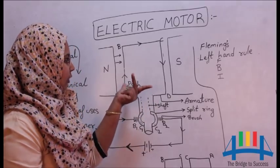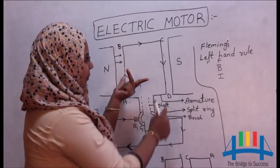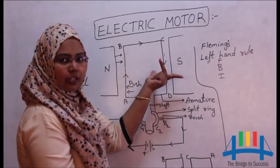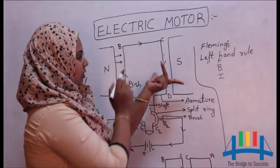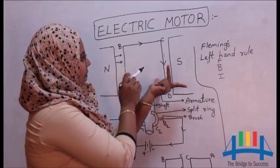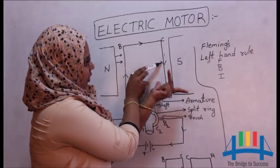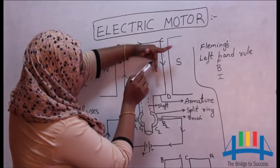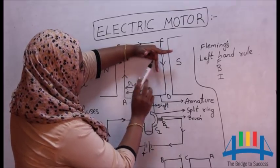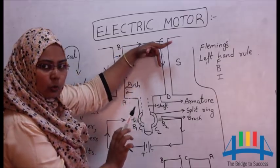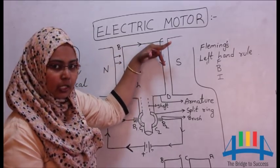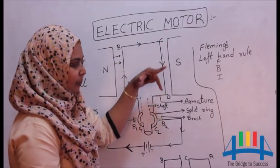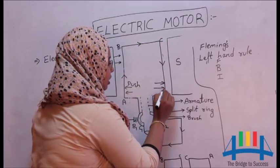The same rule, if I apply to this arm CD, the direction of magnetic field is same. It will never change. That is from north to south. And this time, the current direction is downwards. You can see the arrow coming down. So this is the direction of current, direction of magnetic field. And thumb is pointing outwards, outside the board. So the force is pushing the arm CD outside the board.